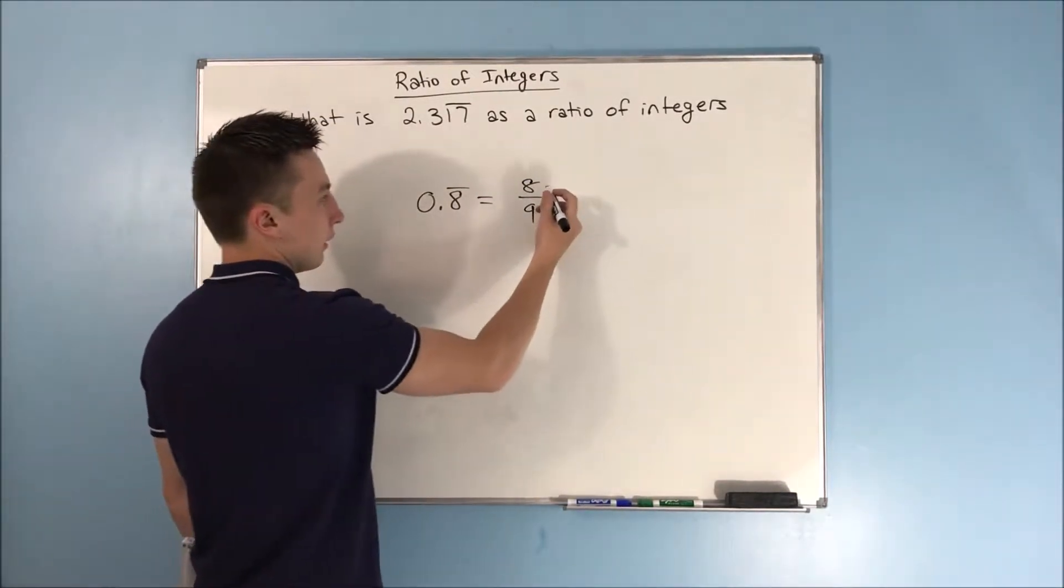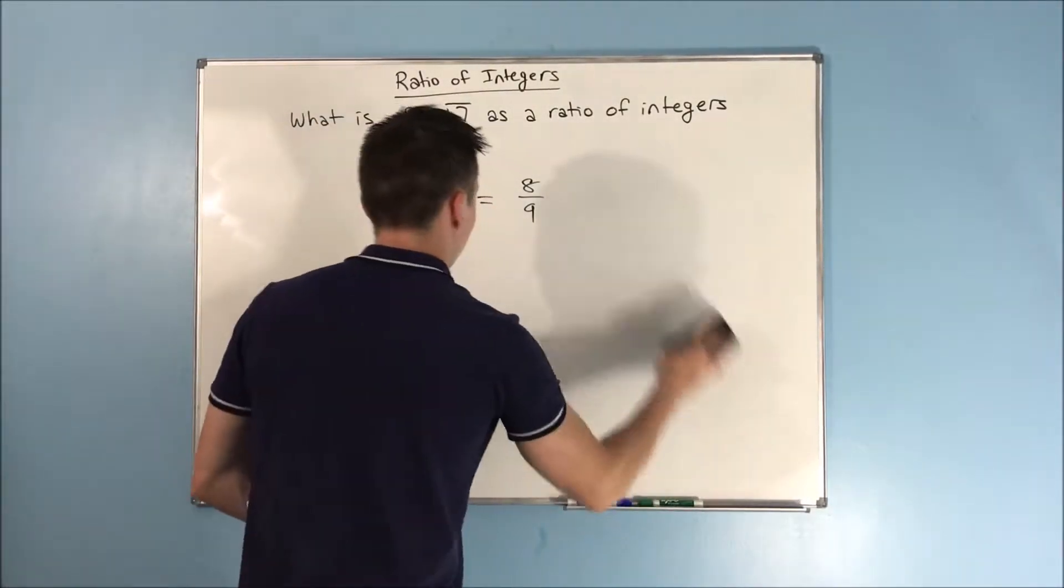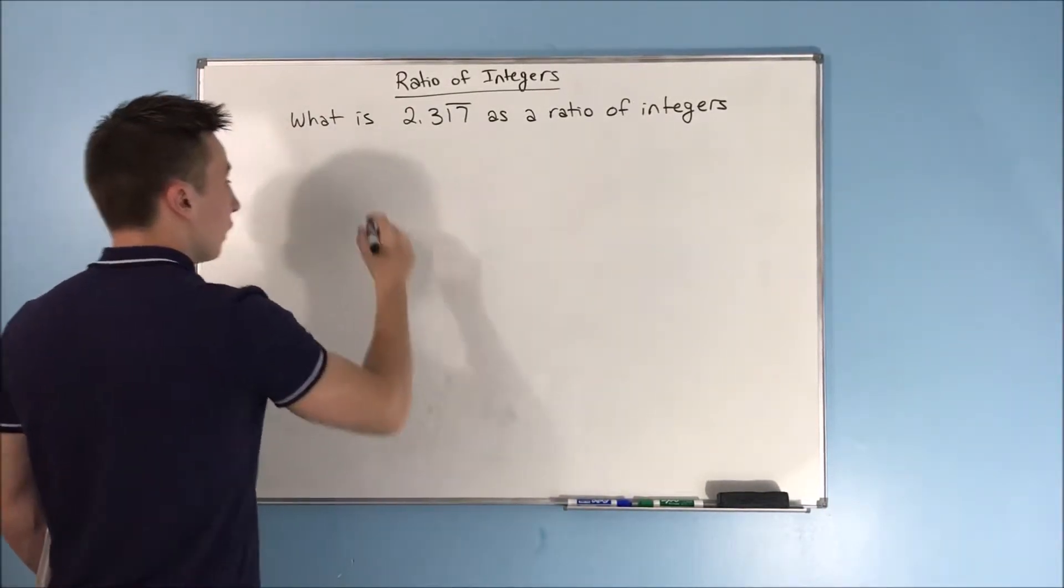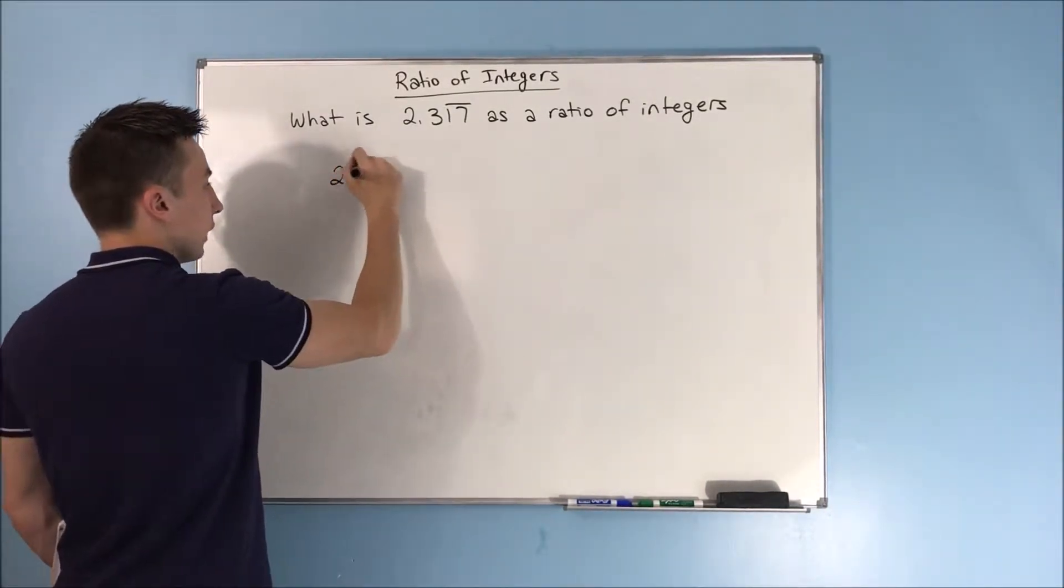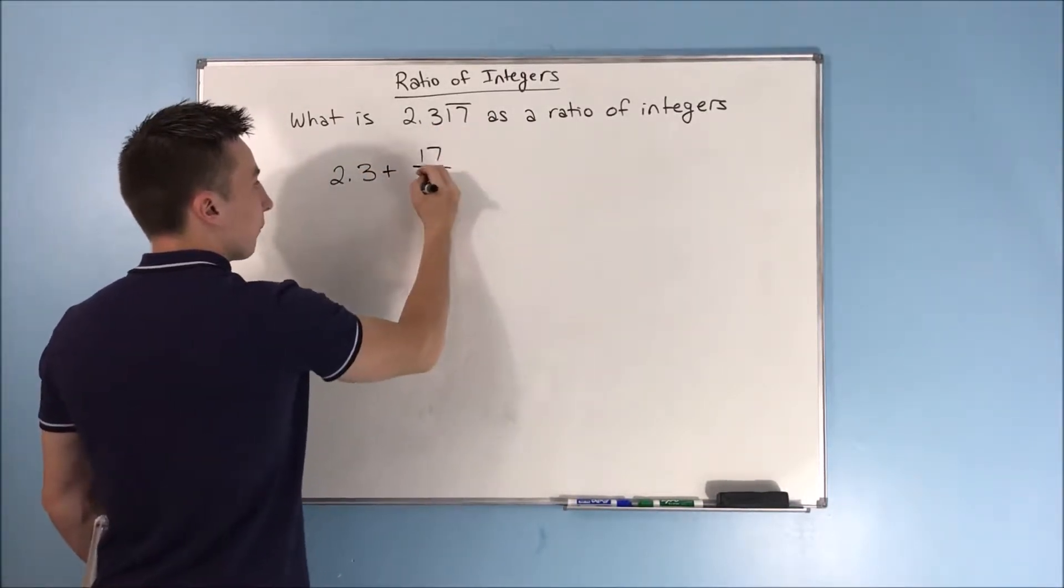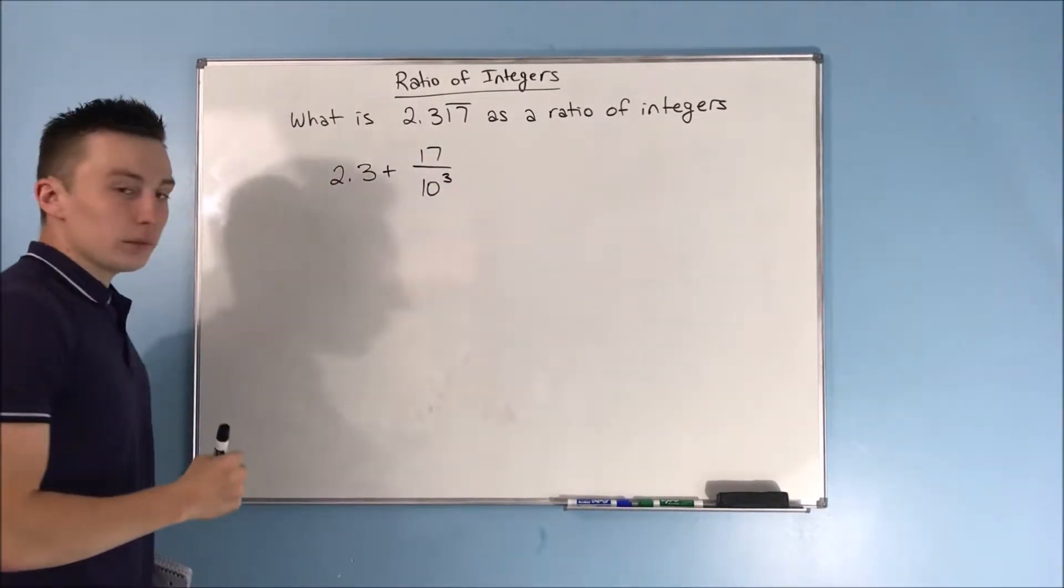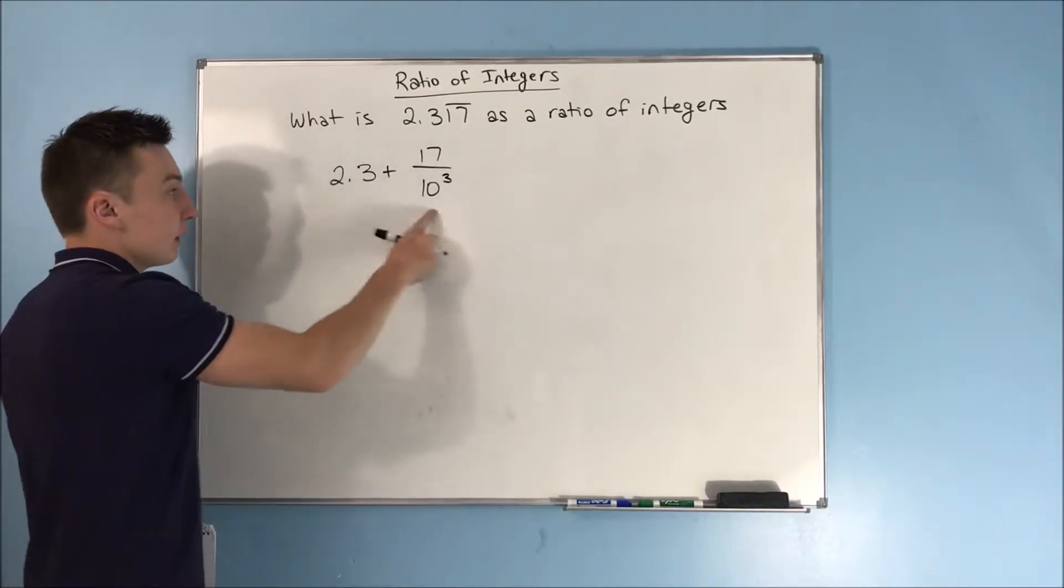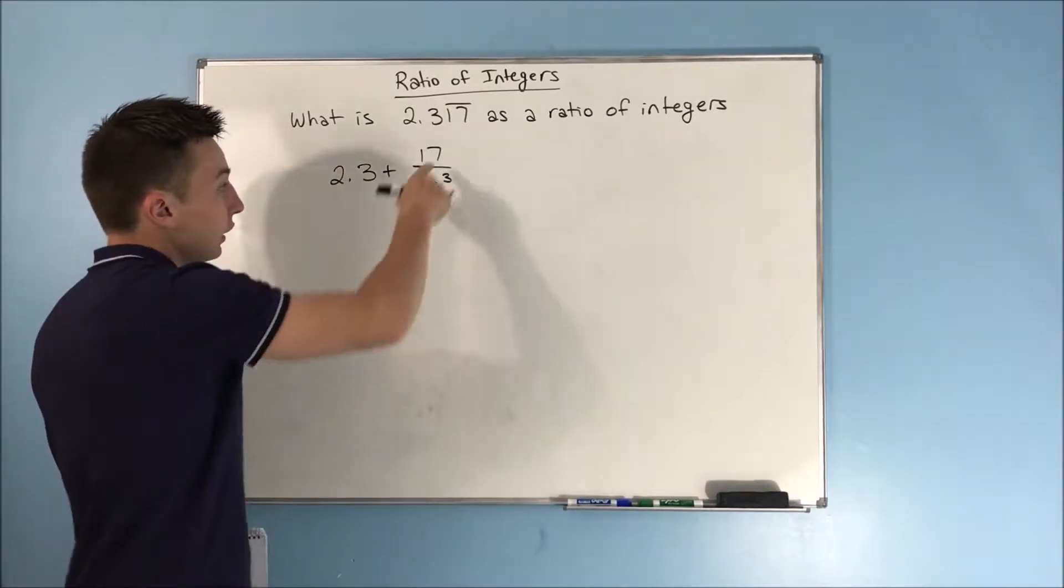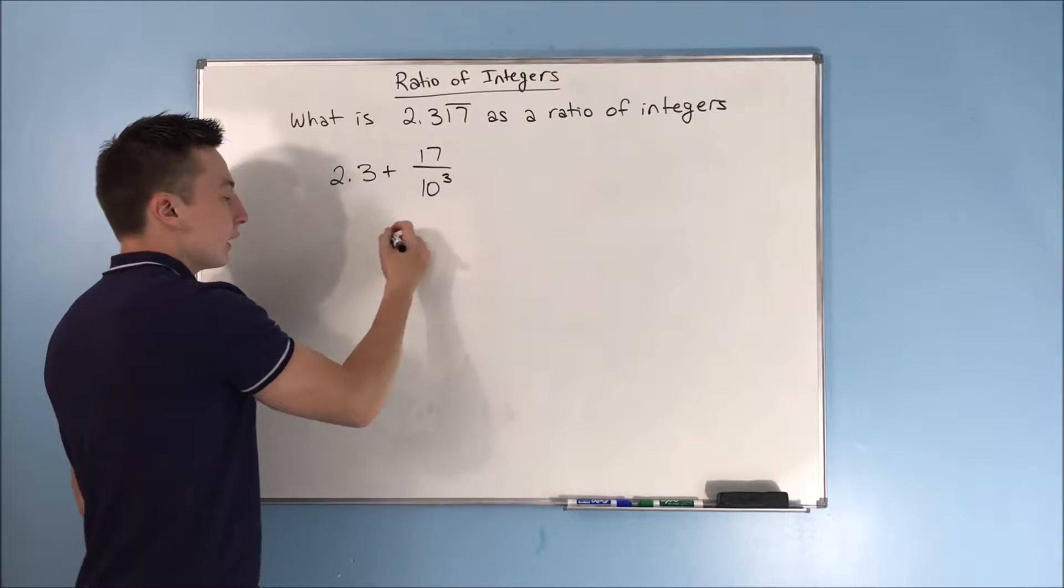These are integers, so let's get started. We can write this number out as 2.3 plus 17 over 10³. This is essentially 2.317. If you do that, 17 over 10³ is the same thing as 0.017. So you add that to 2.3 and you get 2.317.